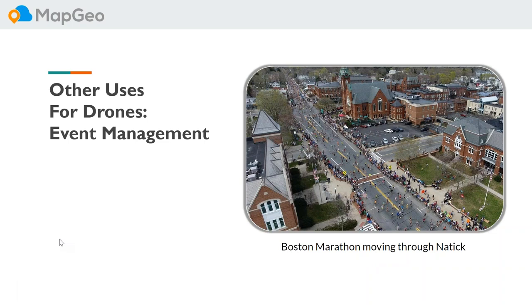The police were one of the early adopters. In our town the Boston Marathon goes right through it, so during the event we bring the drone down onto the race course and do a live stream back to our emergency operations center. This is peak crowds right at noon in Natick. They can get a real-time feel of what's going on — we capture the event and live stream it, which has been a big plus.